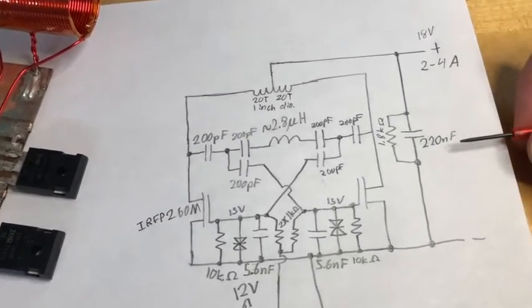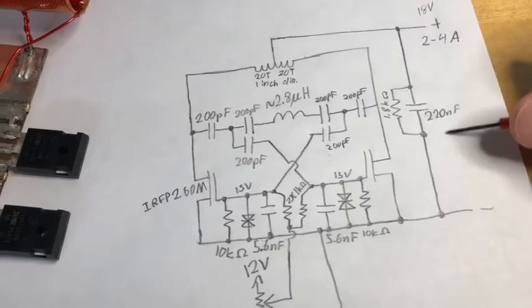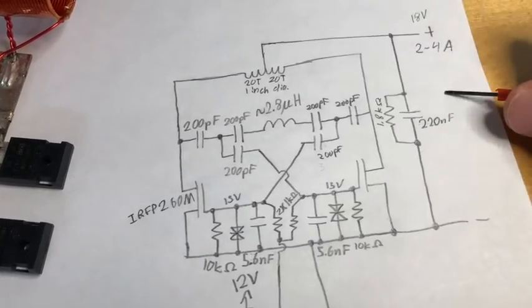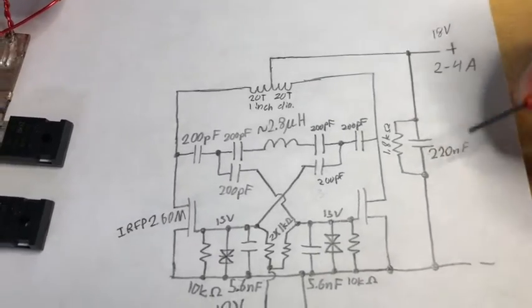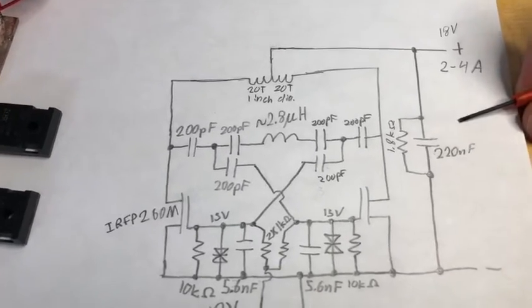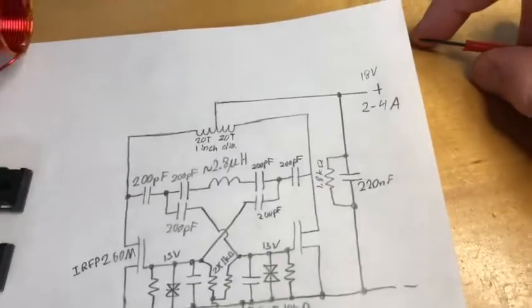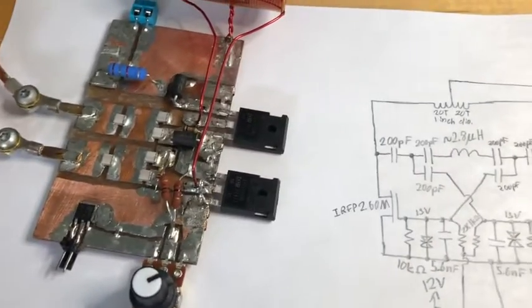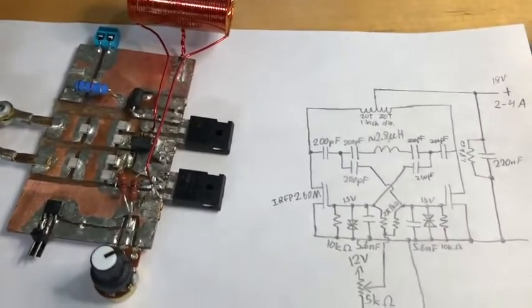And yeah, that's pretty much it. This input capacitor is important for filtering out the high frequency. That can be a film capacitor, or I'm using an X7R ceramic capacitor. That's about everything. If you have any questions, feel free to ask.